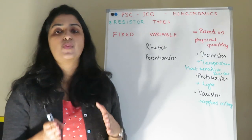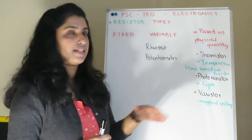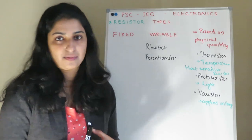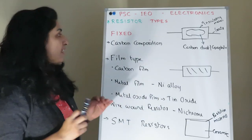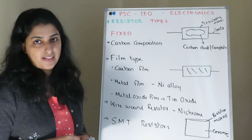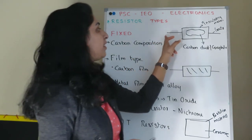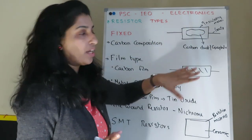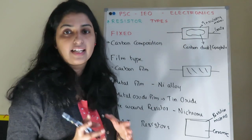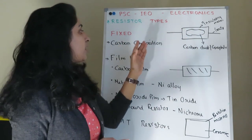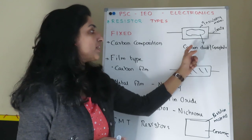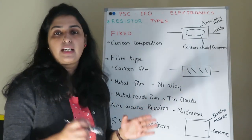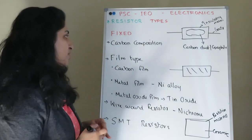The varistor's resistance value changes with voltage. Next, fixed resistors. The first classification of fixed-type resistors is carbon composition resistors. These have connecting leads, insulating material, and a ceramic coating. The resistive material used is carbon dust or graphite — it is a mixture, making it a cheap, general-purpose resistor.